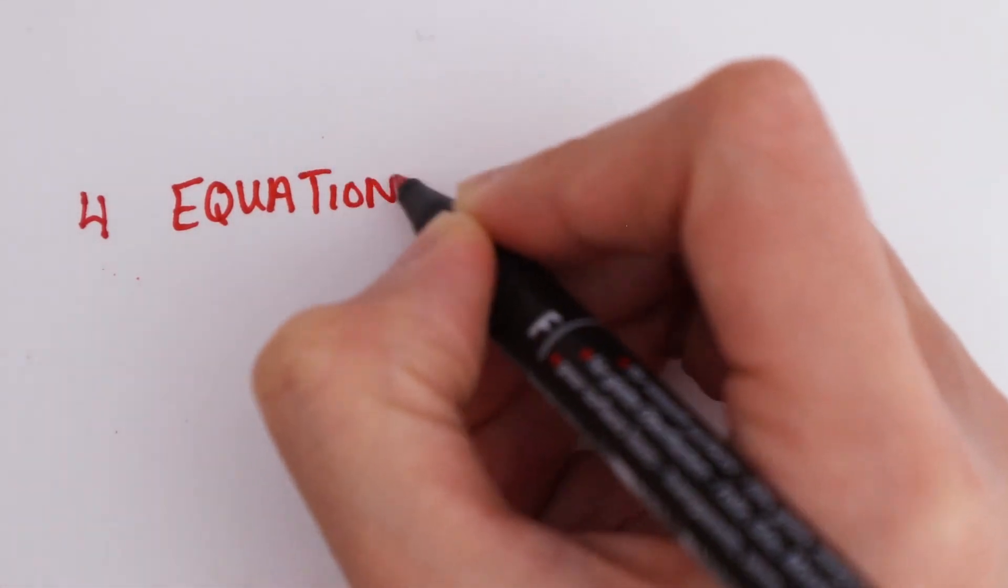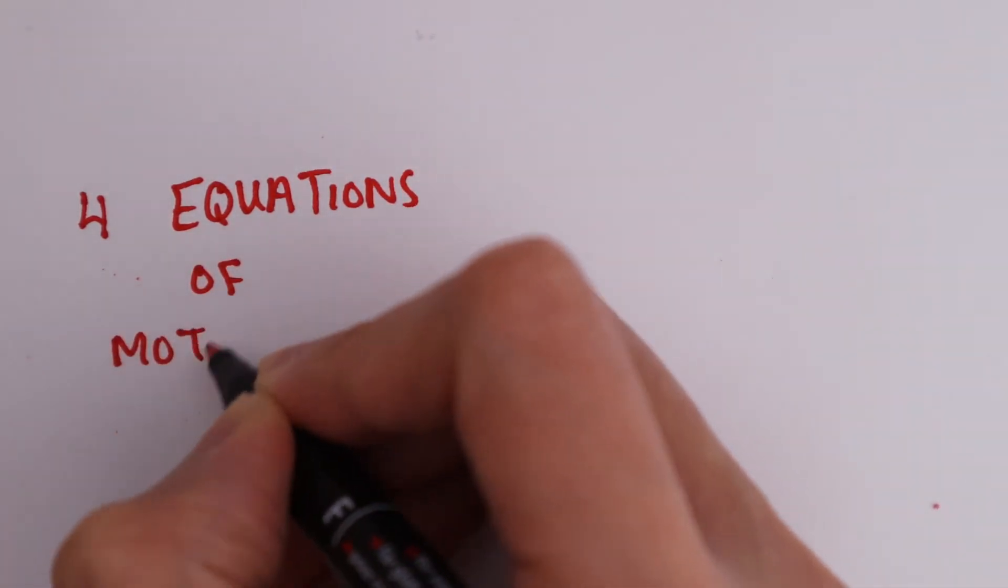There we go. We've derived the 4 equations of motion for constant acceleration.